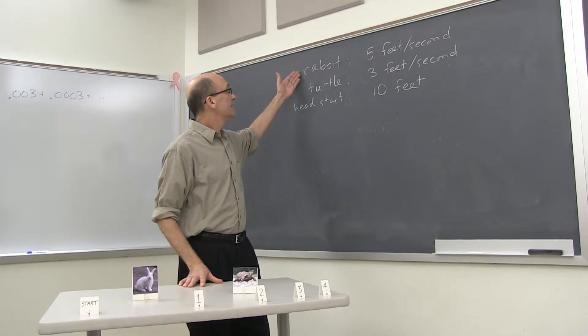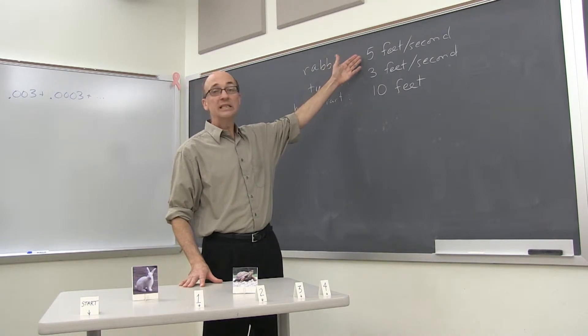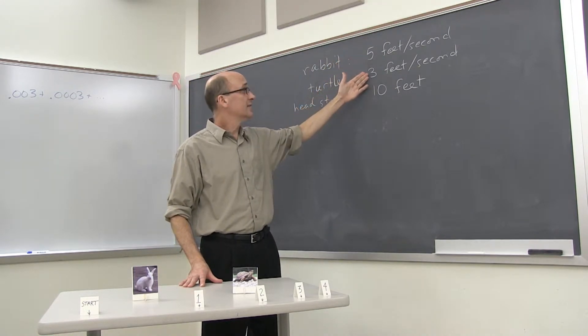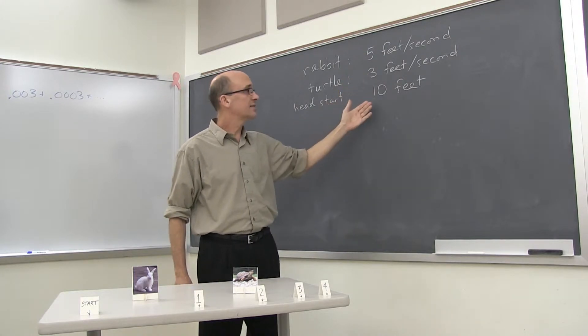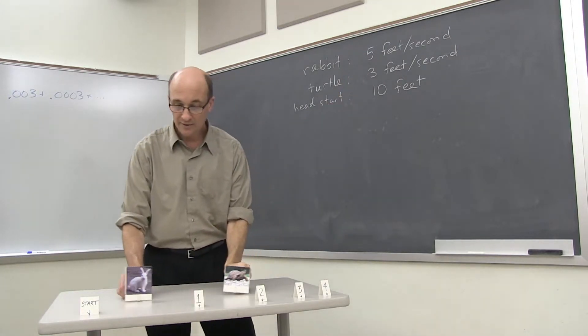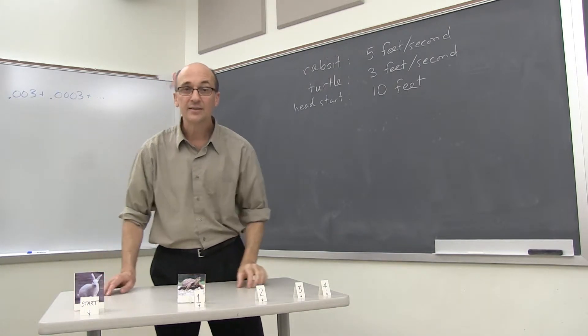So we're going to need some numbers and some particulars. Let's take the rabbit and the turtle and give them some speeds. The rabbit runs along at 5 feet per second, the turtle runs along at 3 feet per second, and let's make the head start 10 feet. So those are numbers that apply to the story now.